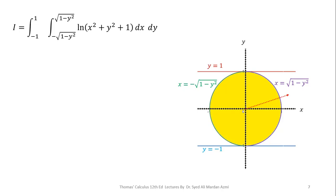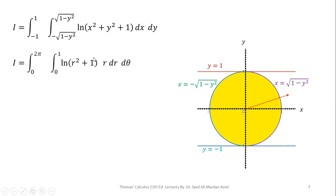If we pass an arrow from the origin crossing this region, the distance of each point of the boundary from the origin equals the radius of the circle, which is 1. Since the origin is also involved in the boundary, the limits of R are from 0 to 1. For theta, the region starts at 0 degrees and after one complete rotation ends at 360 degrees, so the limits are 0 to 2 pi.